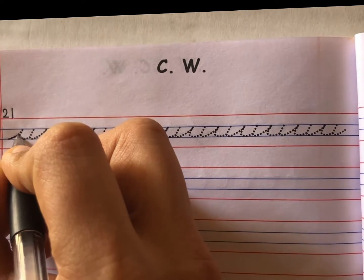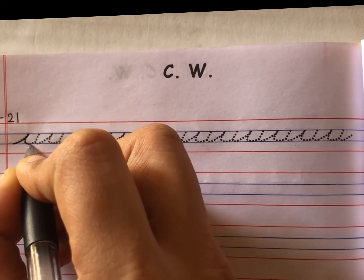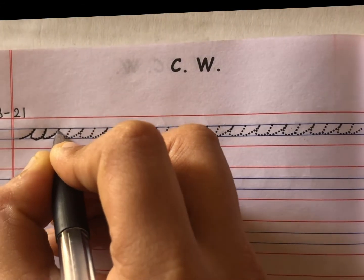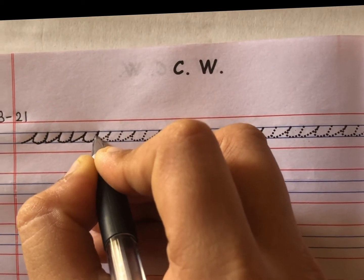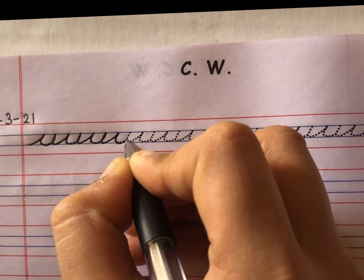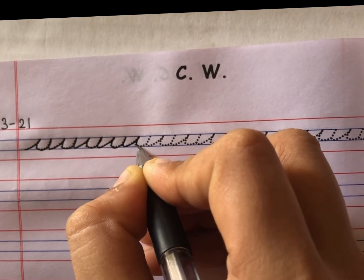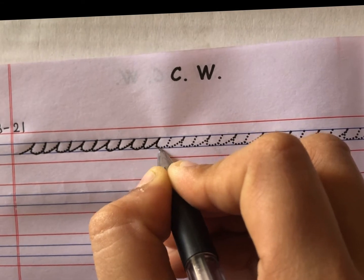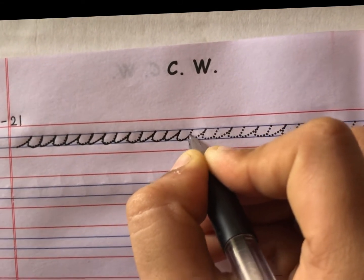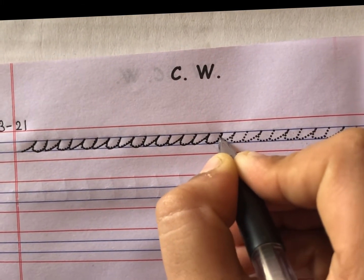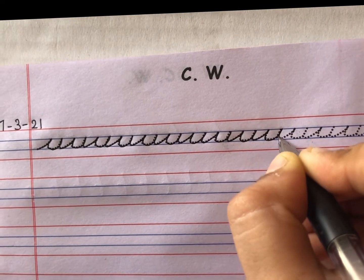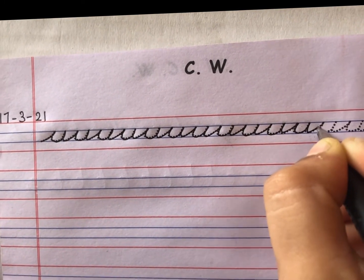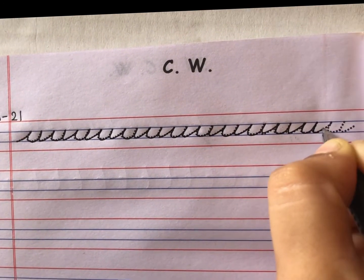Okay kids, come on. Slanting line up, come down, write U. Again slanting line up, write U. Come down, slanting line up, write U. Come down, slanting line up, U. Slanting line up, come down, write U. Again slanting line up, U. Again slanting line up, U. So this is letter U.